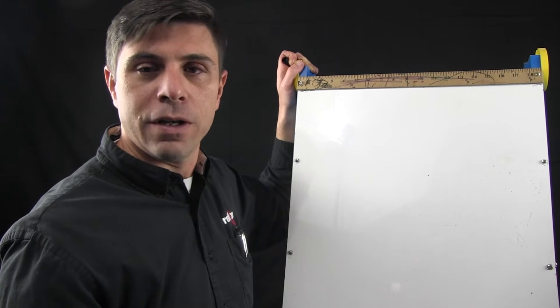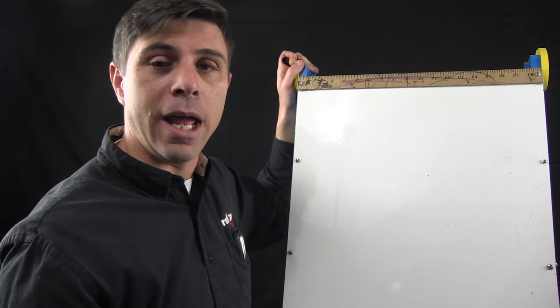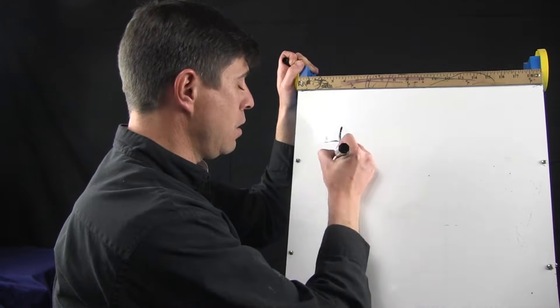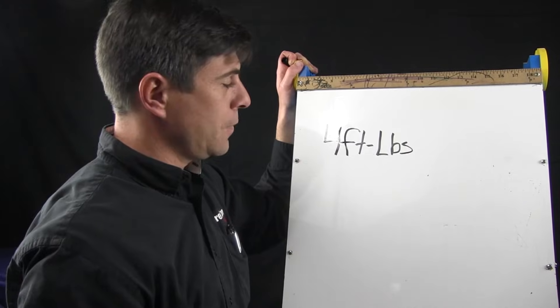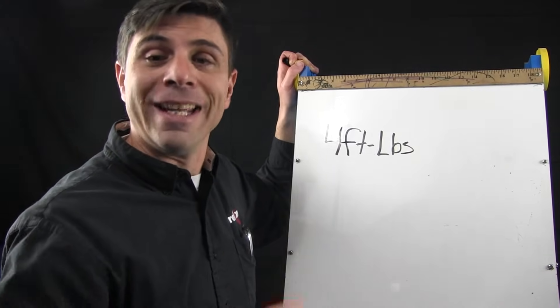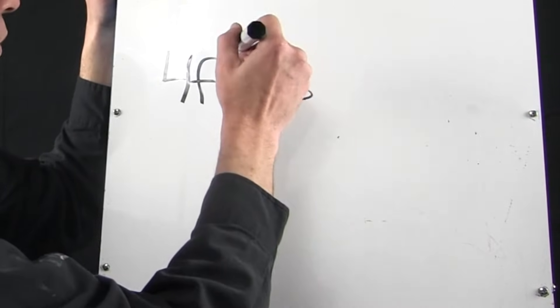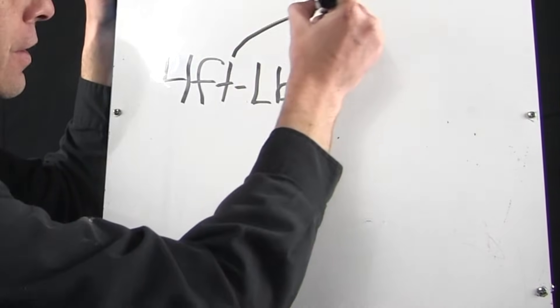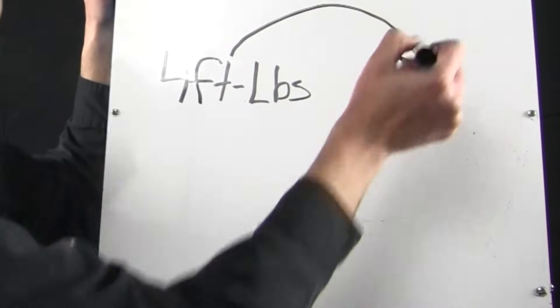Let's say you have a torque wrench that's set at 4 foot-pounds, and we need to convert that to inch-pounds. Remember, when we go from foot to inches, what do we do?